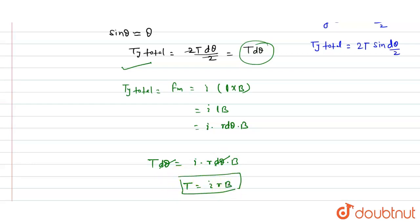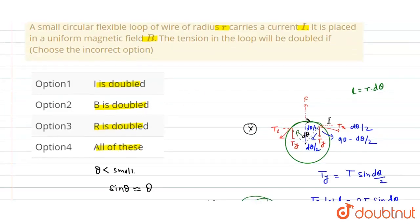Therefore, tension T equals IRB, where I is the current, R is the radius, and B is the magnetic field. In this question we have to find the incorrect option. We get tension T equals IRB, and we see that tension is directly proportional to I, R, and B.